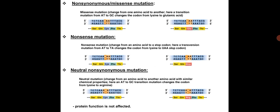In neutral non-synonymous mutation, there is a change from one amino acid to another amino acid with similar chemical properties. An AT to GC transition mutation changes the codon from lysine to arginine, but the protein function is not altered.